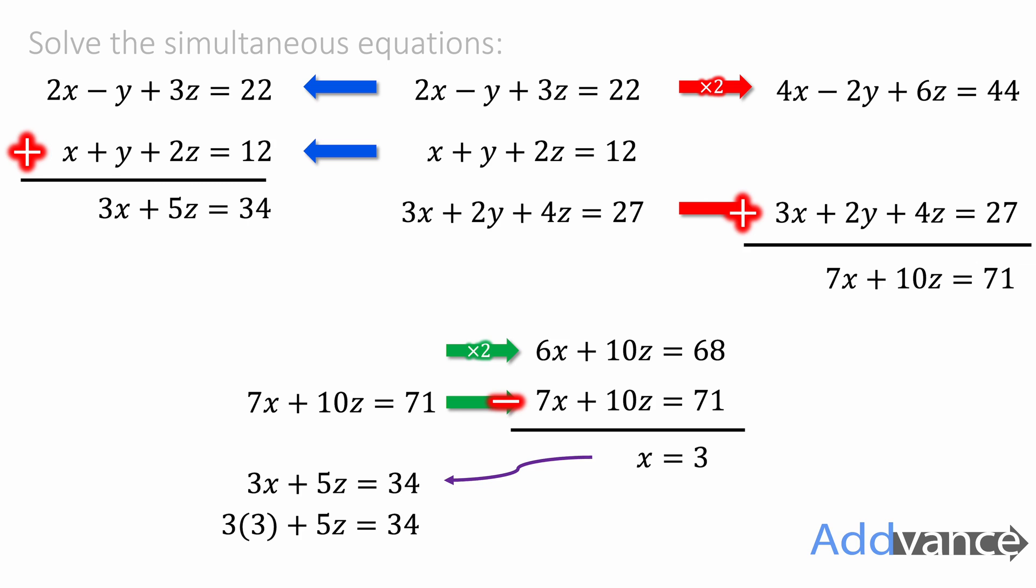So 3 times 3 plus 5z which is 9 plus 5z is 34. Take 9 off both sides. 5z is 25. And we divide by 5. Z is equal to 5. We've now found that z is equal to 5.